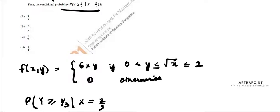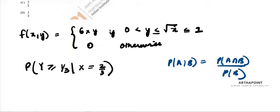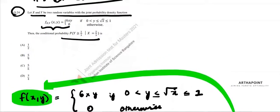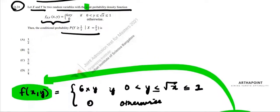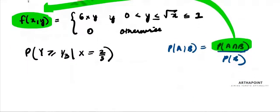Given X is 2/3. Let's do this. The probability of A given B is the probability of A intersection B upon the probability of B. The probability of A intersection B is given by the joint density function, which we already have.